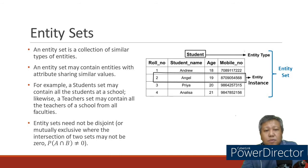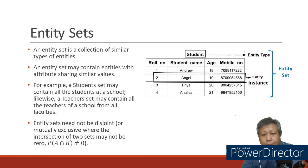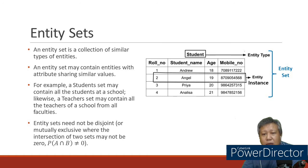Entity sets — what is an entity set? It is the representation of our table with values. The column names are: role number, student name, age, and mobile number. When we assign values, one row — combining the role number, student name, age, and mobile number of, say, Angel — is called an entity instance.